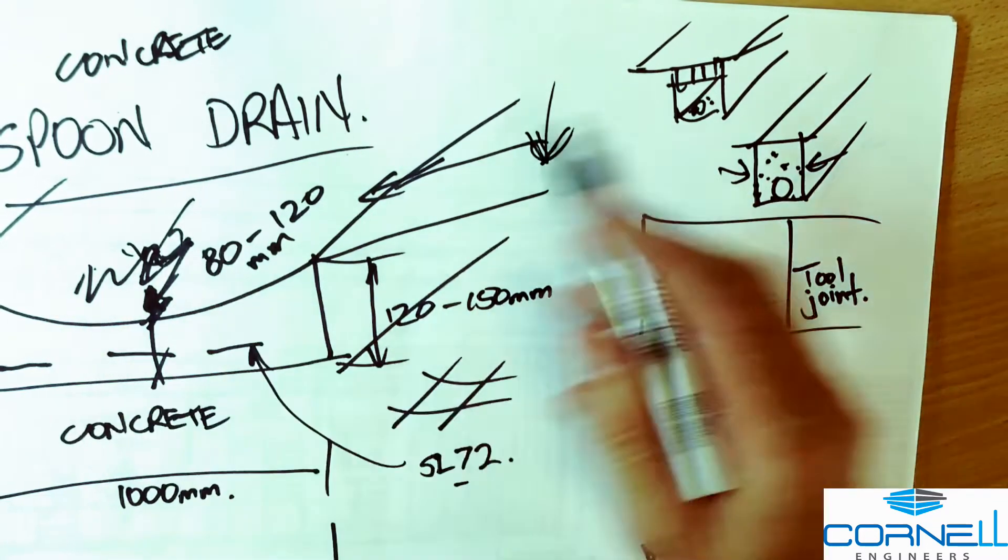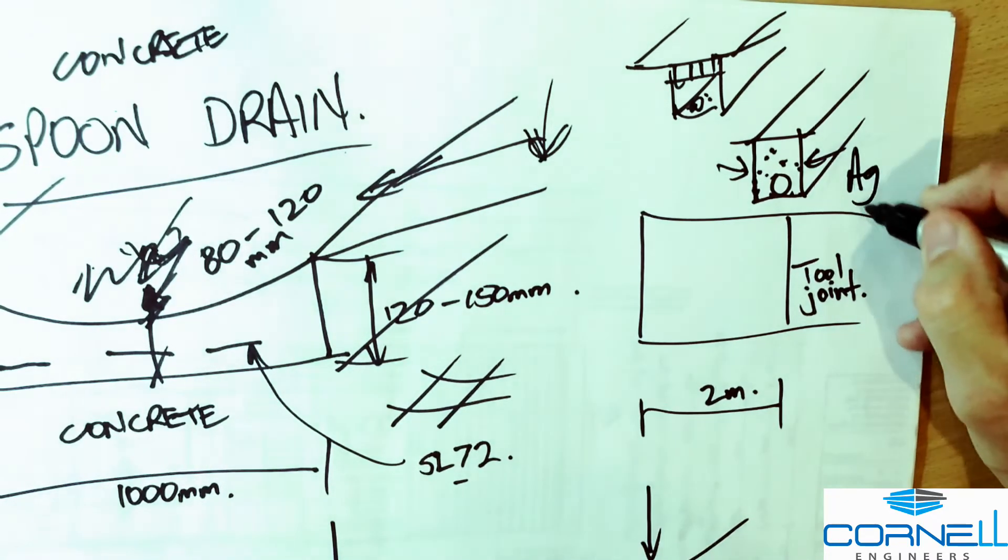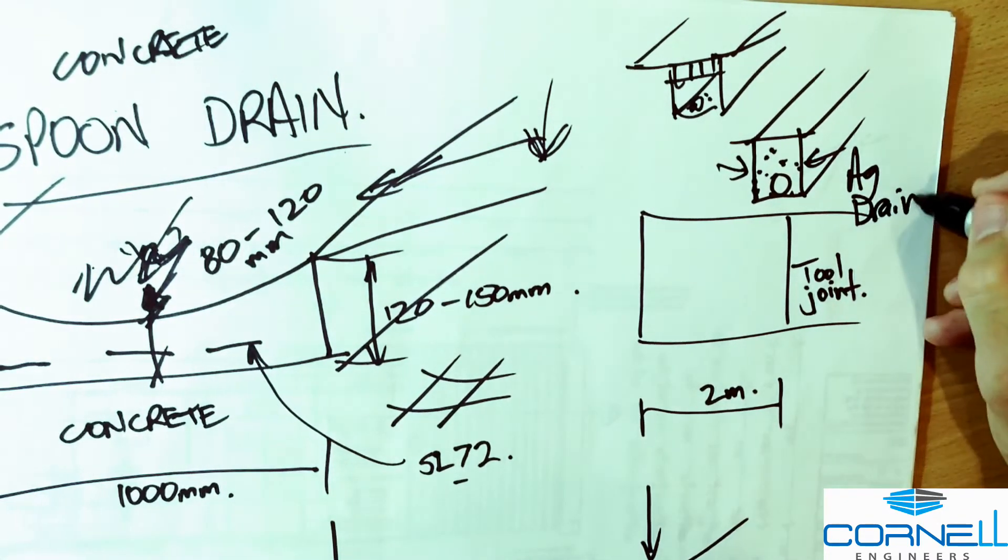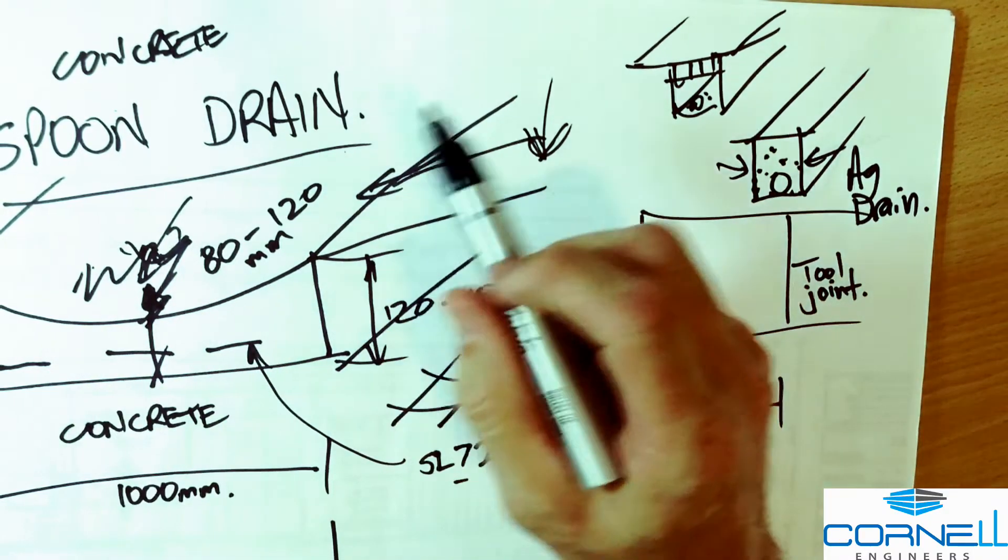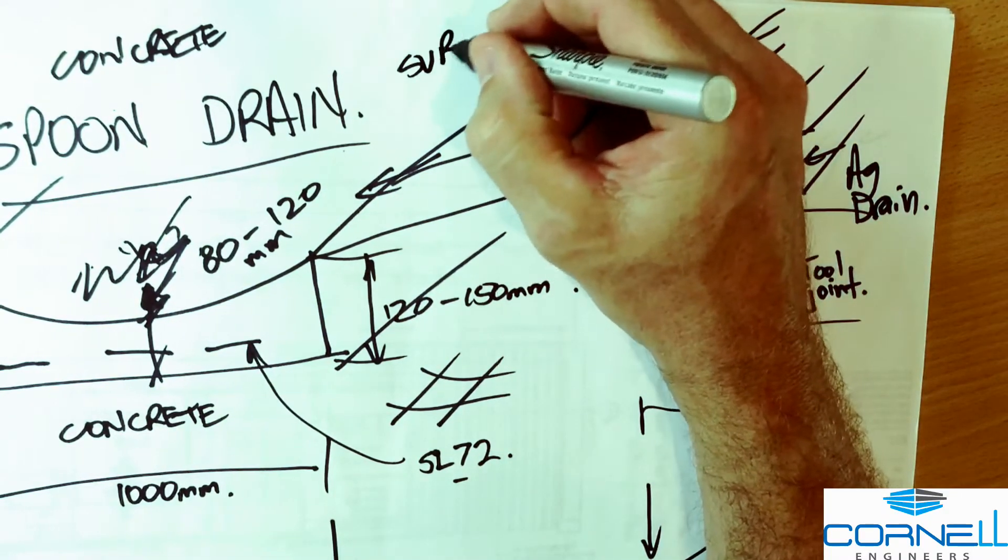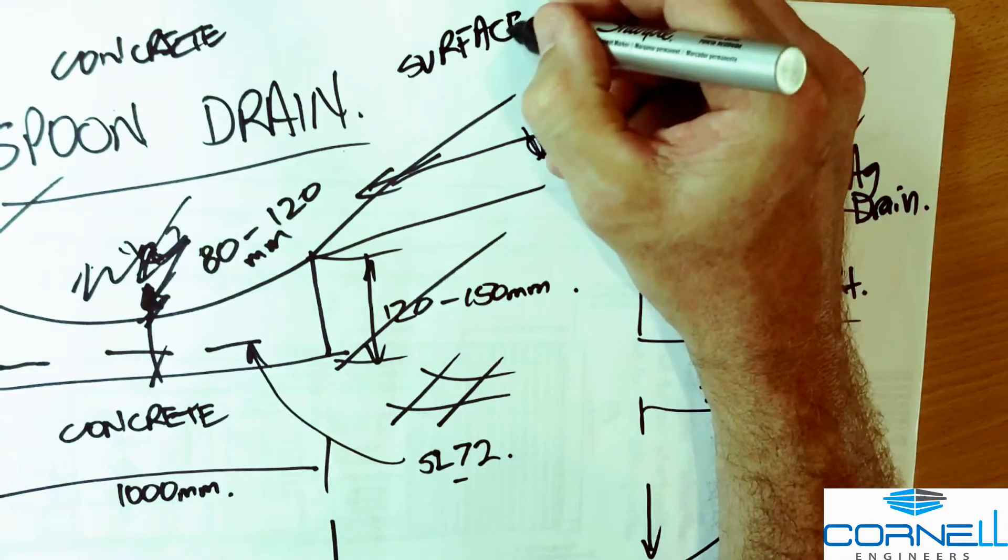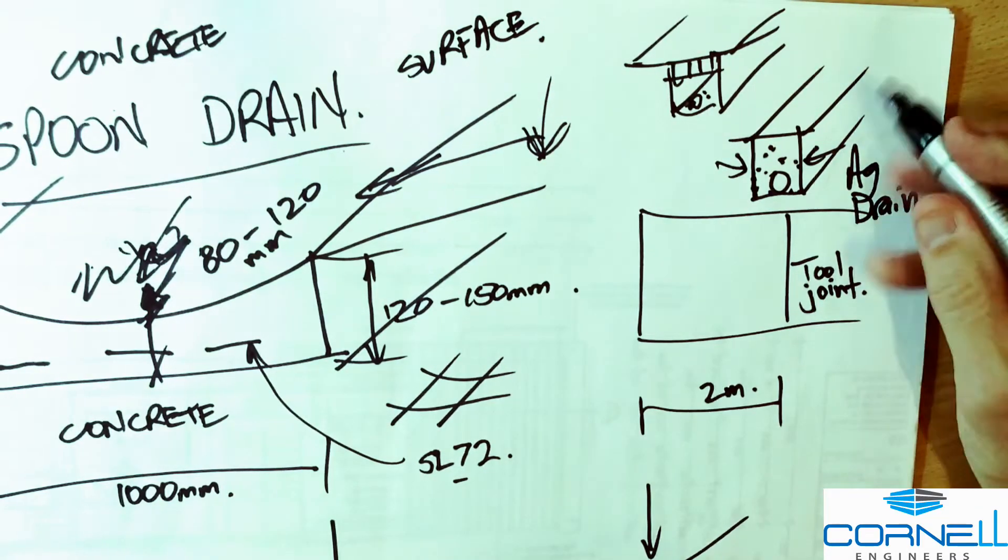We don't really use ag drains where we have water already on the surface. So this is really good for surface water, taking away surface water before it can soak into the ground. And ag drain on the other hand is really good for collecting water that's already soaked into the ground.